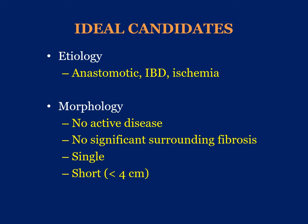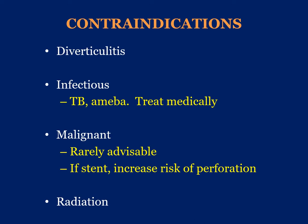The ideal candidates are patients who have an anastomotic type of stricture, or a select group with inflammatory bowel disease or ischemia. The best stricture is a single stricture shorter than four centimeters, with no active disease and no significant surrounding fibrosis. Contraindications include diverticulitis, where a long segment of diseased bowel requires resection, and infectious-related strictures, which are best treated medically. In the setting of malignancy requiring stent placement, balloon dilatation carries increased risk of perforation. Radiation-induced strictures are also not good candidates as they involve long segments with significant fibrosis and scarring that do not respond to balloon dilatation.